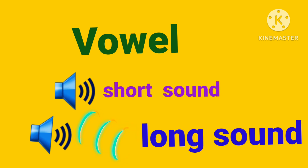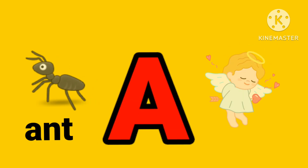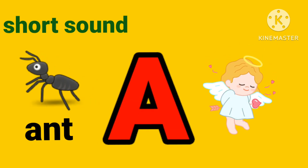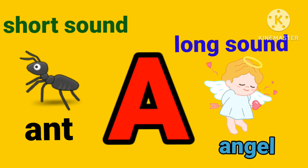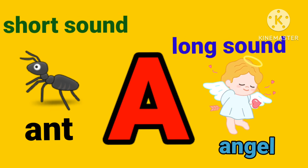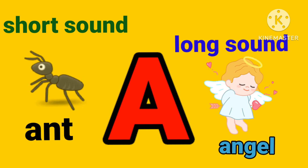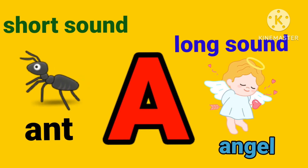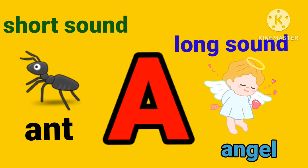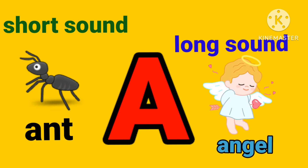Vowels help in word formation. Vowels have two sounds each, and they don't sound the same — one is short and the other is long, and it says its name. Now let us see one by one. Letter A is a vowel and it has two sounds: short sound and long sound. Short sound: 'ah, ah' as in ant.